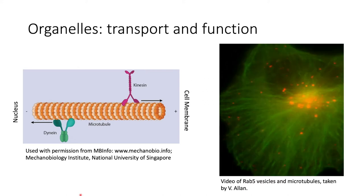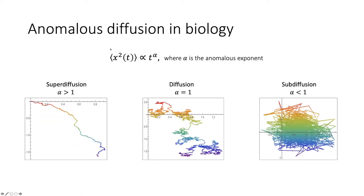It turns out that there exists a mathematical formalism that can describe the motion of these endosomes quite well, and this is called anomalous diffusion. Anomalous diffusion is fully characterised by the mean square displacement being proportional to time to the power of alpha, where alpha is the anomalous exponent. Alpha equals 1 corresponds to pure diffusion, alpha less than 1 corresponds to sub-diffusion, and alpha greater than 1 corresponds to super-diffusion. Below each value I've shown a qualitative plot of what the motion of a particle moving in two dimensions would look like.